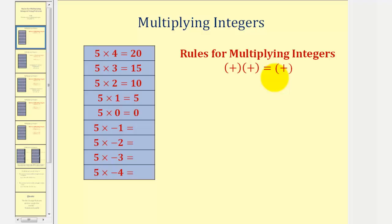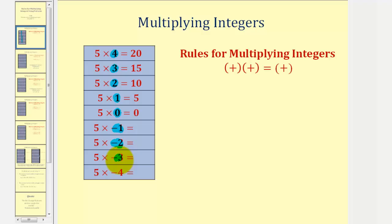We'll start with a product of positives and work our way toward a product of a positive and a negative. We'll start with five times four, keep the first factor five, and then decrease the second factor by one each time. The second factor starts at four, then decreases by one to three, two, one, zero, negative one, negative two, negative three, and then negative four.